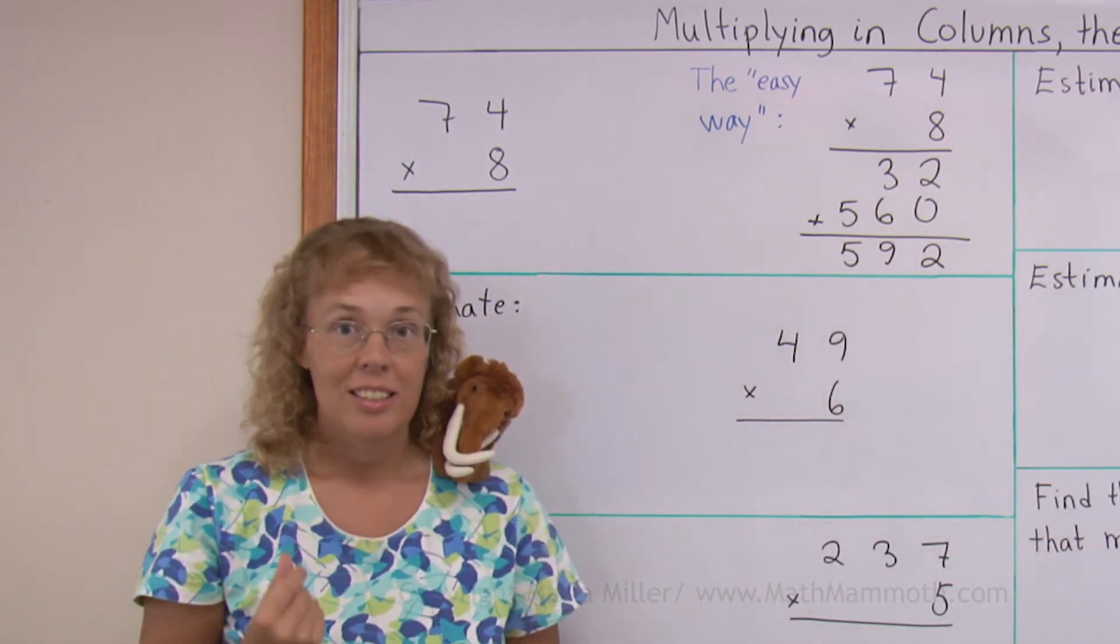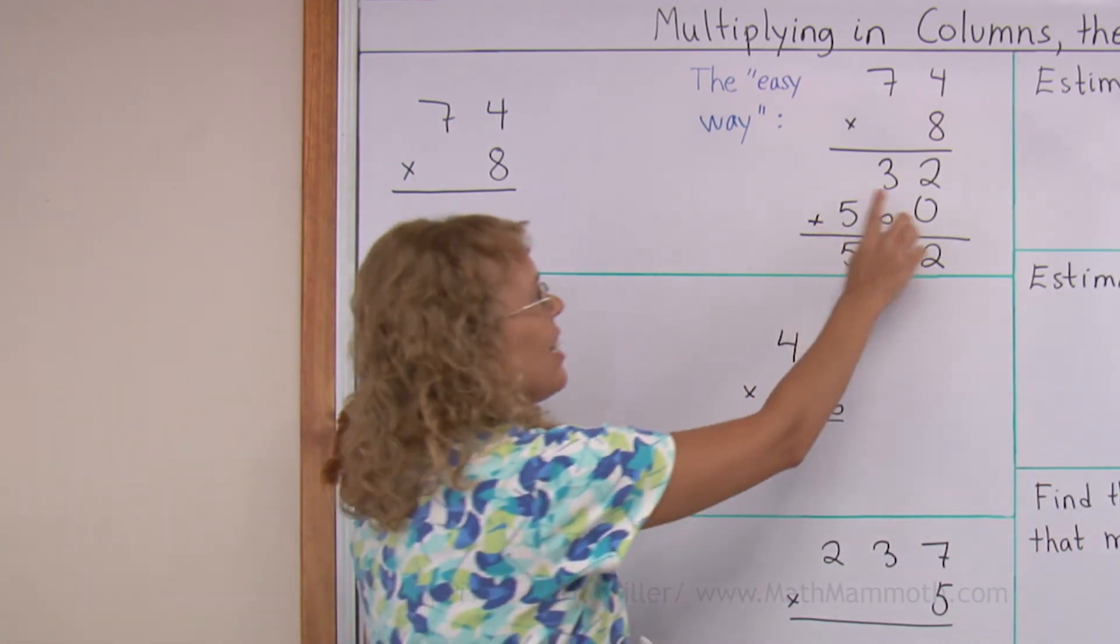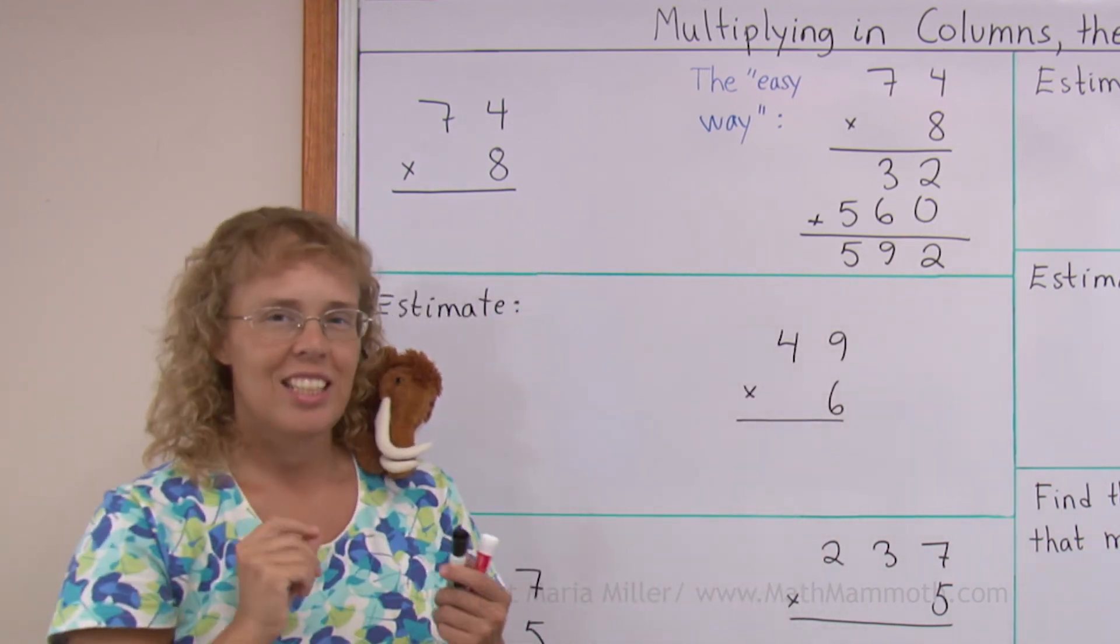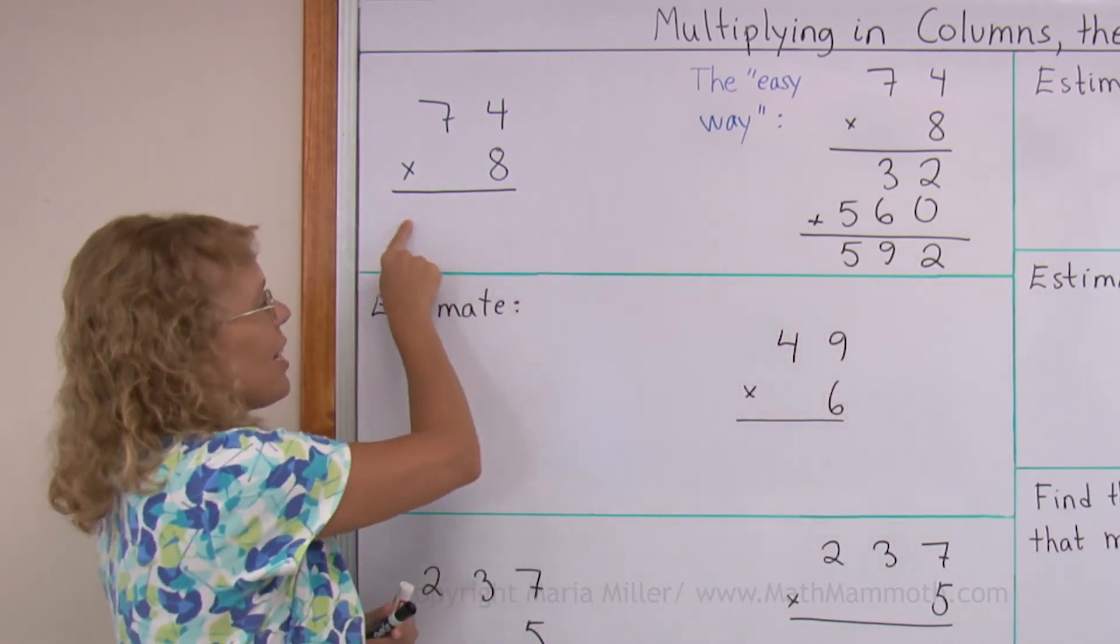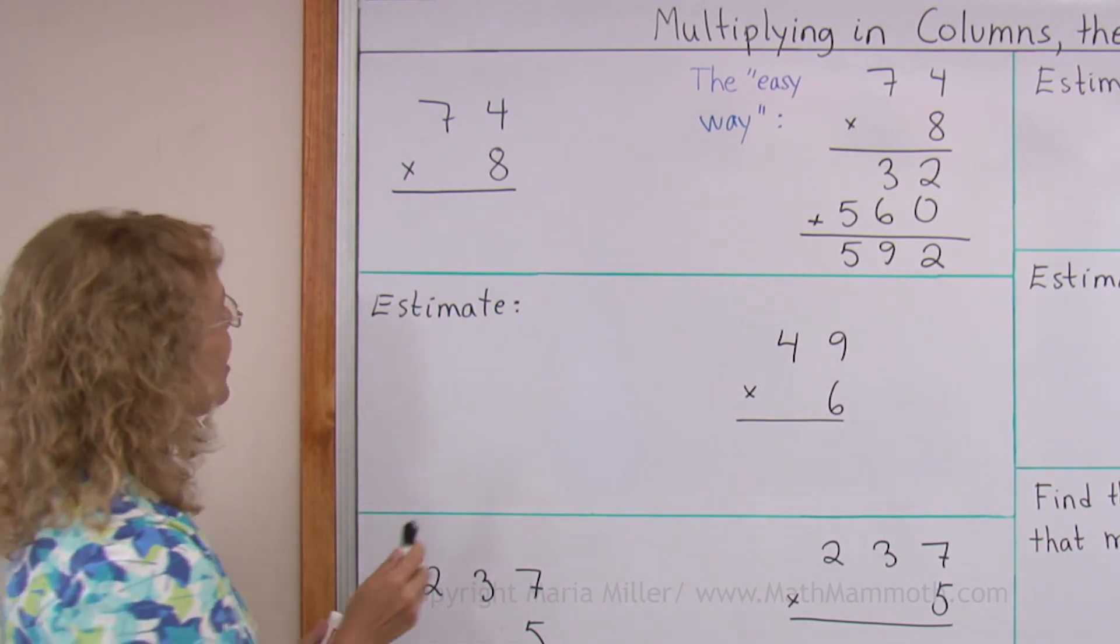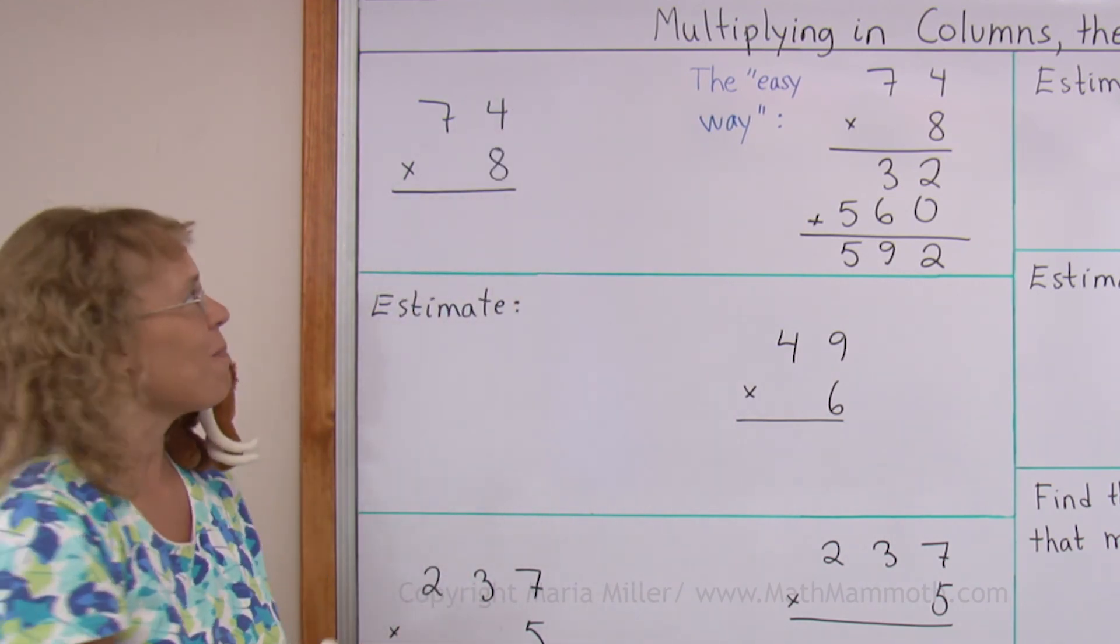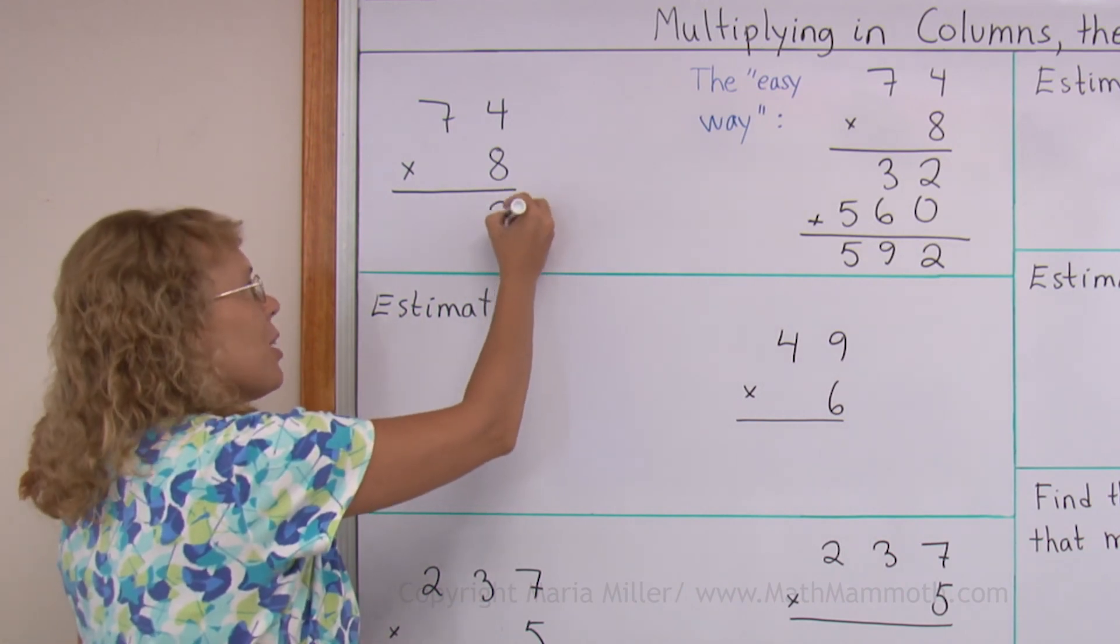Now, in the standard way this addition is done at the same time as we are multiplying. So there is going to be less to write here. It goes like this: 8 times 4, 32 again. But I only write 2 here.